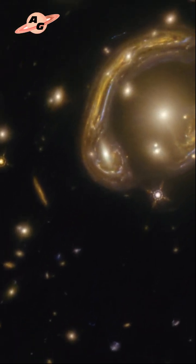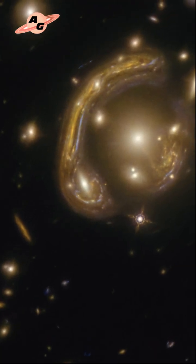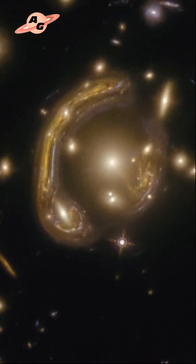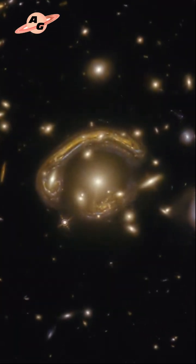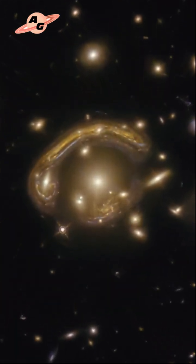Since the object is located in our sky in the southern constellation Fornax, its nickname, Molten Ring, looks quite accurate and logical. The Molten Ring is most likely a spiral or lenticular galaxy.